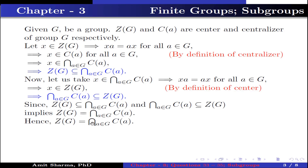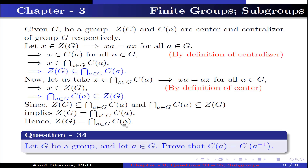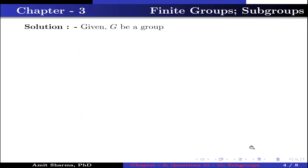Hence Z(G) equals the intersection over A ∈ G of C(A). Question number 34: Let G be a group and let A ∈ G. Prove that C(A) = C(A⁻¹).